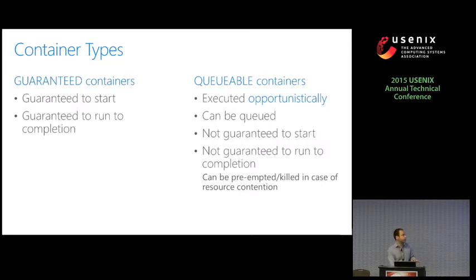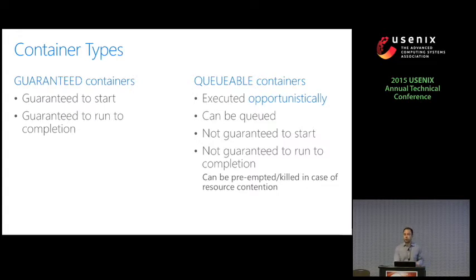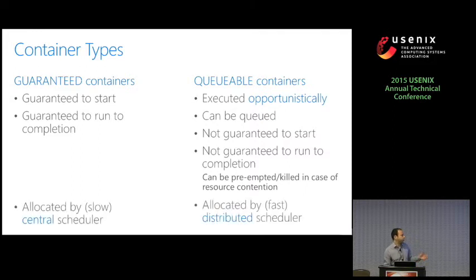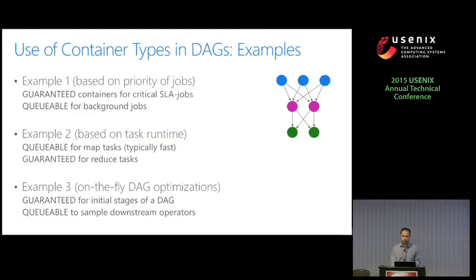In our system, we have defined so far two types of containers: guaranteed containers and queueable containers with different characteristics. Guaranteed containers are guaranteed to start and are guaranteed to run to completion — nobody can preempt or kill them. Queueable containers, on the other hand, are executed opportunistically; they can be queued at the end hosts, are not guaranteed to start, and are not guaranteed to run to completion — they can be preempted or killed in case of resource contention. Guaranteed containers are allocated through the central scheduler, and queueable containers through the faster distributed schedulers.